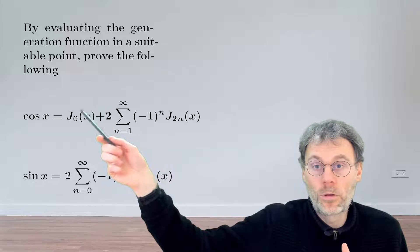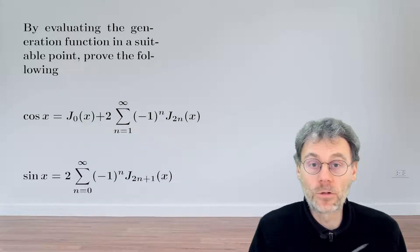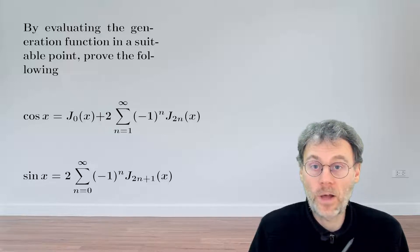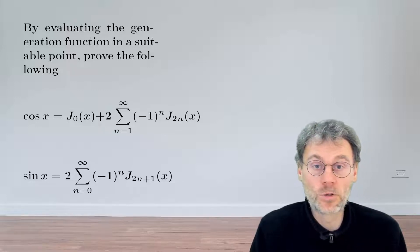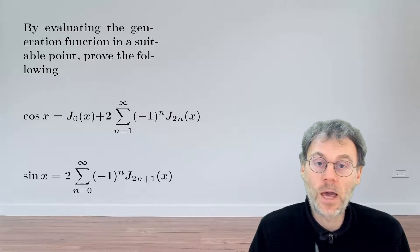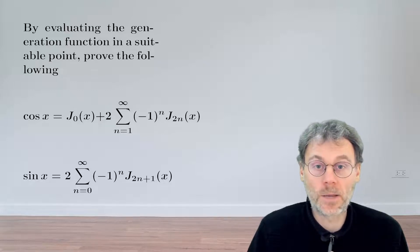It turns out you can write both cosine and sine as a sum of Bessel functions of different orders. In order to show that that's true, you can evaluate the generating function in some sort of mysterious suitable point. So pause the video and see if you can identify that suitable point and then also take the next steps.